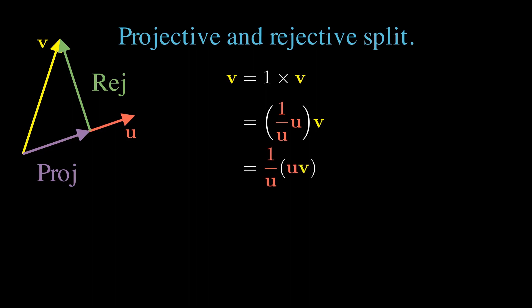We switch our multiplication grouping, expanding the product of u and v in terms of its dot and wedge components. Finally, we distribute the u inverse. We call the dot product term the projection, and the wedge product term the rejection.